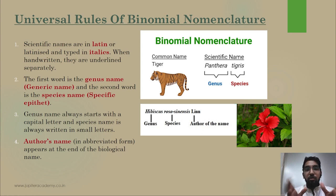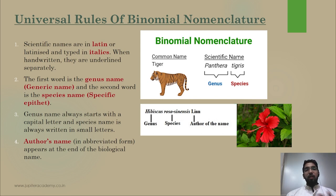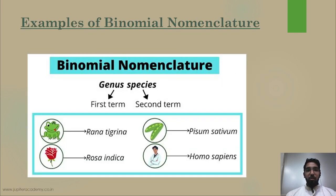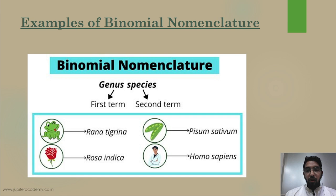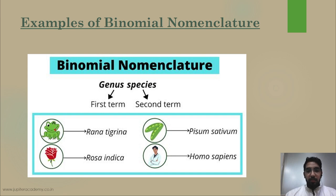Other examples of scientific names: frog is Rana tigrina; rose is Rosa indica; pea is Pisum sativum; and a human being is Homo sapiens.